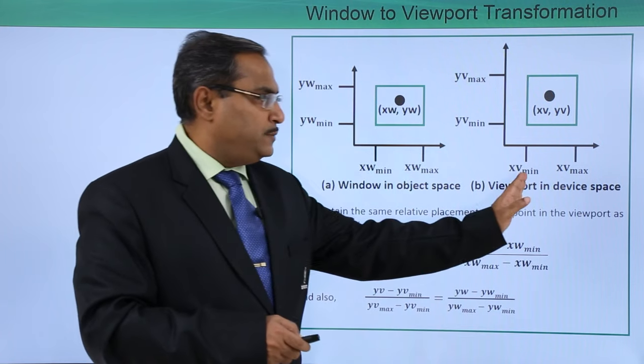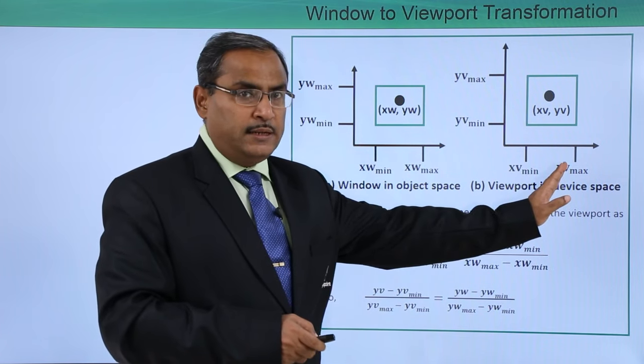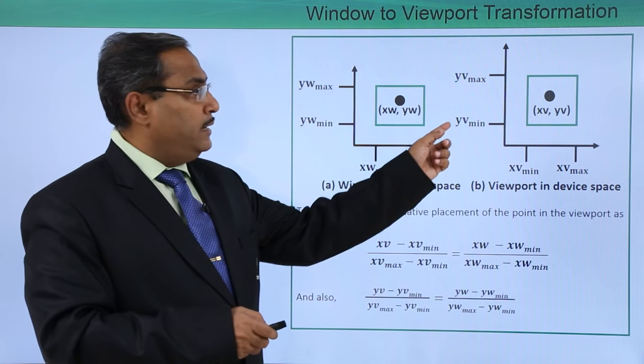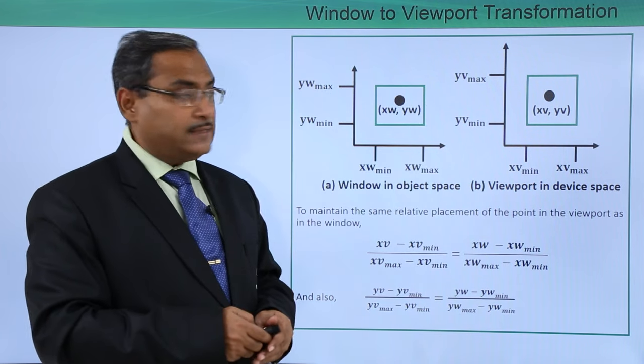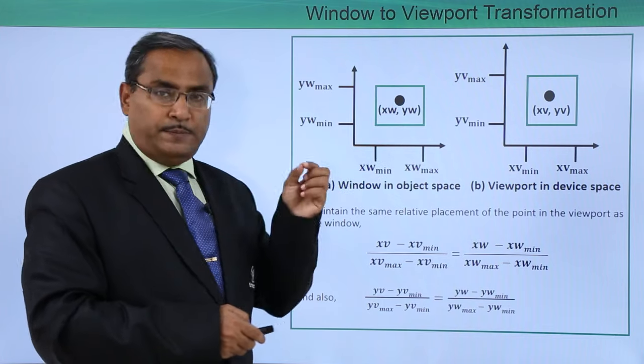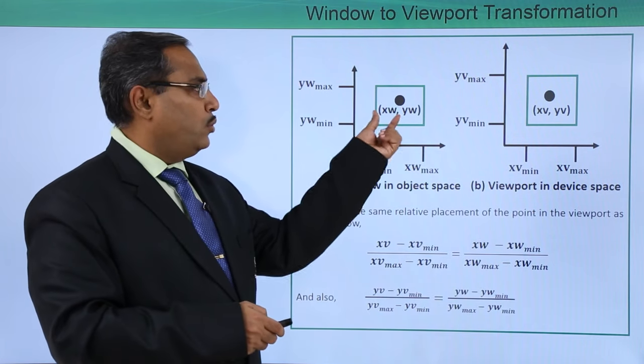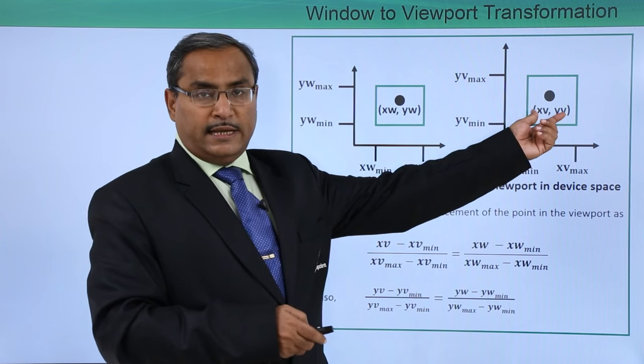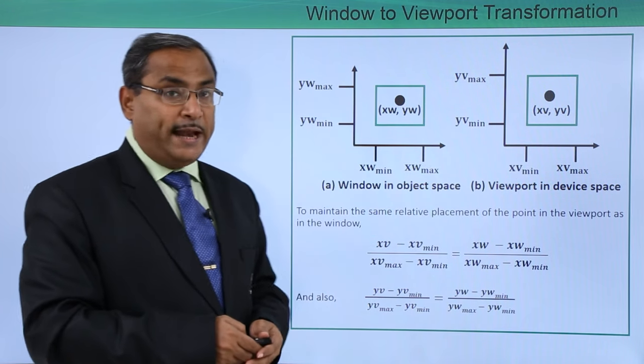Here we are having XV min, XV max because it is our viewport and here we are having YV min and YV max. This is the respective point we are considering here with the coordinate XW, YW and the same point has got the coordinate XV and YV.